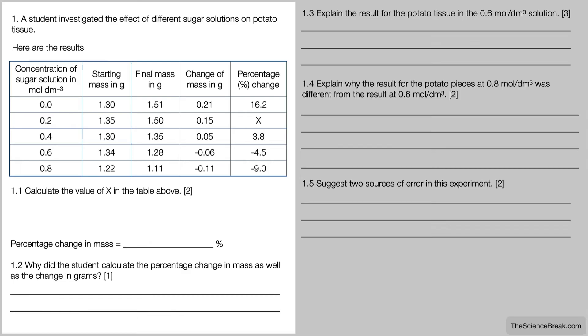It's the change in mass divided by the starting mass times 100. So we would do 0.15 divided by 1.35 times 100, and that gives us an answer of 11.1%. We could put that in our answer space there.